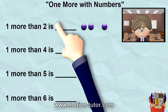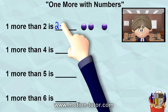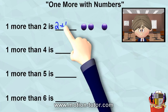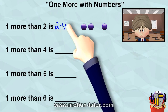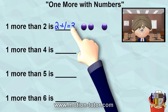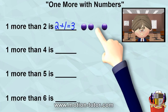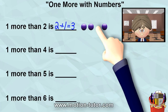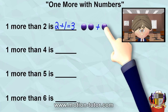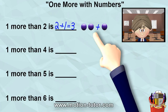So it is two plus the one, and that is equal to three. Here's the two plus the one, and that equals three altogether.